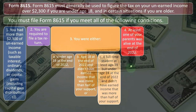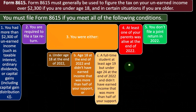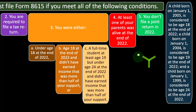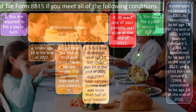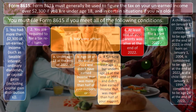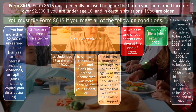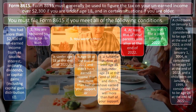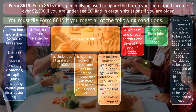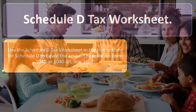Four, at least one of your parents was alive at the end of 2022. Five, you didn't file a joint return in 2022, which would indicate you weren't married. Note: a child born on January 1st, 2005 is considered to be age 18 at the end of 2022; a child born January 1st, 2004 is considered age 19; and a child born January 1st, 1999 is considered age 24 at the end of 2022 — important for those born right on the cutoff.